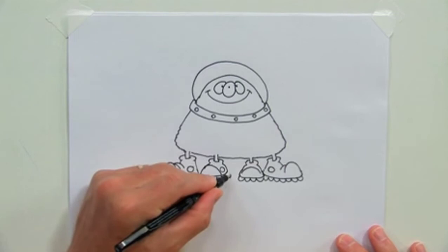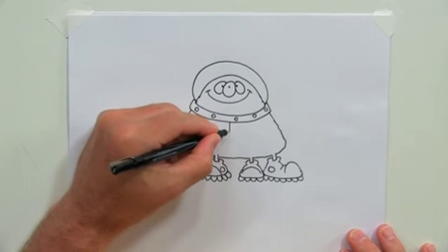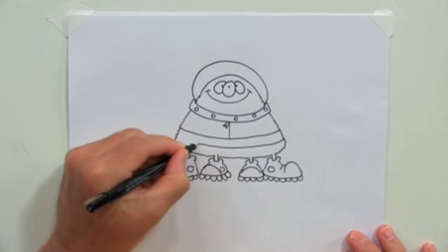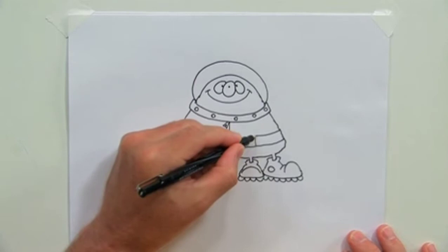What do you say we give him a little zipper there for a space suit and a utility belt, because all aliens have utility belts. Can't forget the buckle. Let's put a couple little things on here. He's just carrying some stuff.